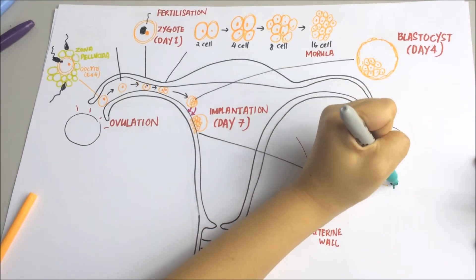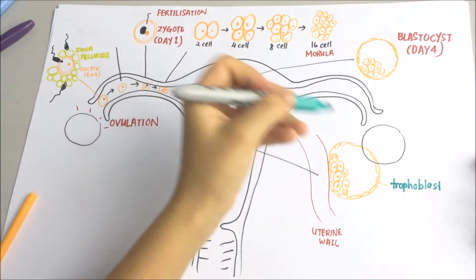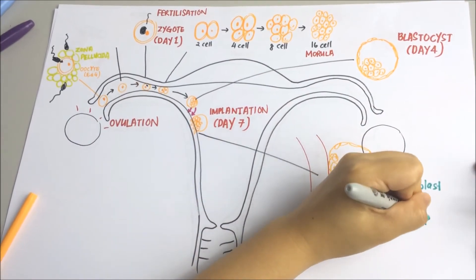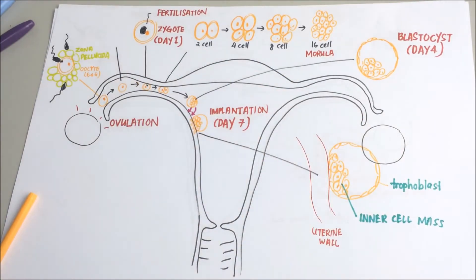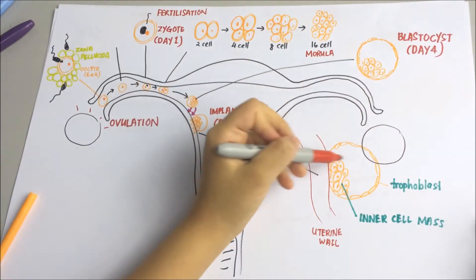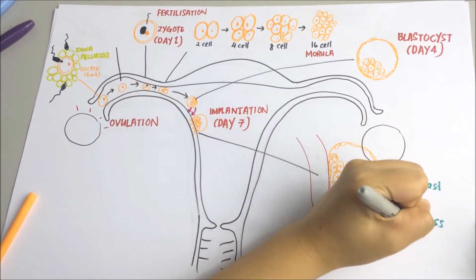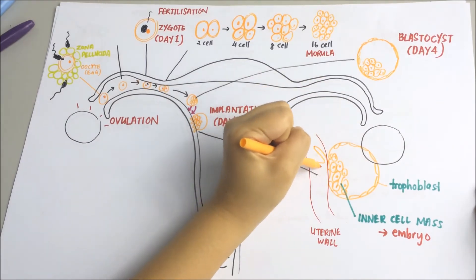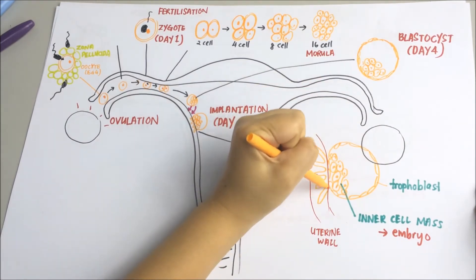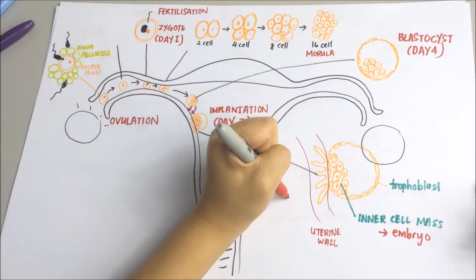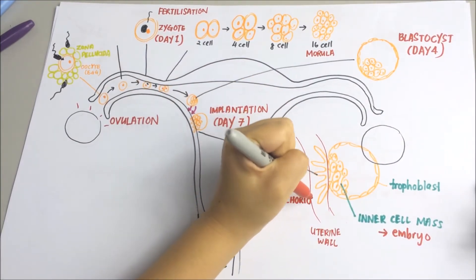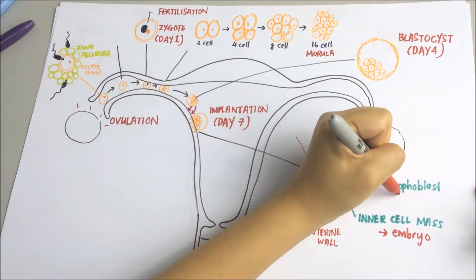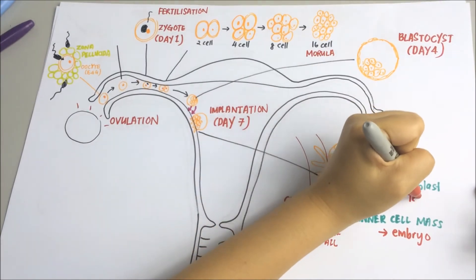Taking a closer look at the uterine wall during implantation: the blastocyst consists of an outer layer of cells known as the trophoblast, and a mass of cells known as the inner cell mass, which will eventually develop into the embryo. The trophoblast will penetrate the wall of the uterus by forming finger-like projections known as chorionic villi, and this will form the fetal portion of the placenta.